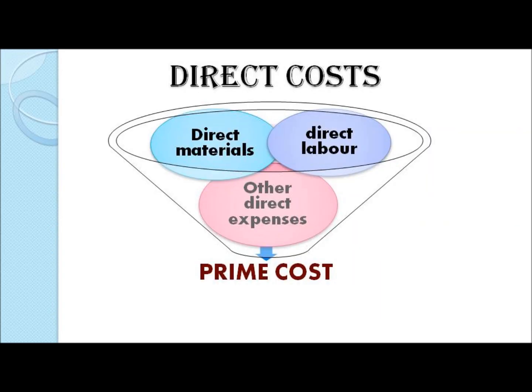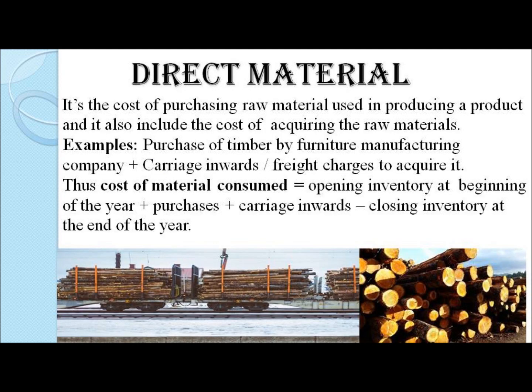To begin with, we record all the direct costs in the manufacturing account. Direct costs consist of direct material, direct labor, and direct expenses, and together the accumulation of all these direct costs is termed as prime cost. Direct material is the cost of purchasing the raw material as well as the cost of transporting the raw material from the supplier to the factory.